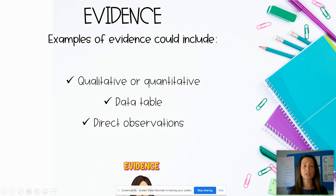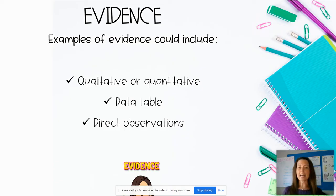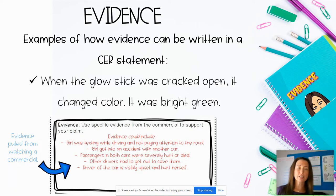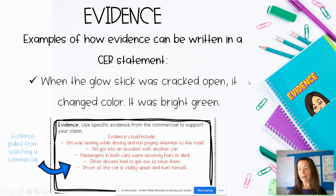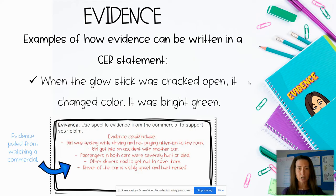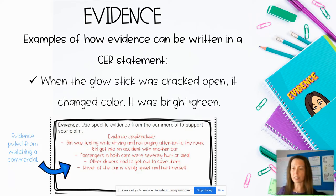Examples of evidence can include qualitative or quantitative — either numerical evidence or a descriptor type of evidence. Students can get this from their data tables or from direct observations during a classroom demonstration. For example, when teaching chemical and physical changes, I usually bring in glow sticks. Evidence could be written as: when the glow stick was cracked open, it changed color — it was bright green. That's two sentences explaining what happened and what color it changed to.